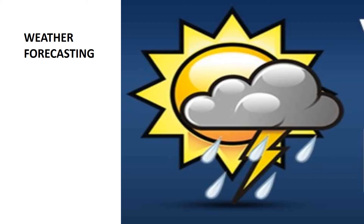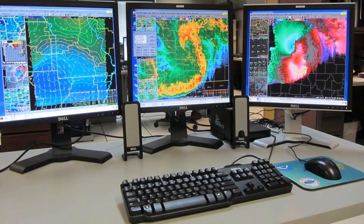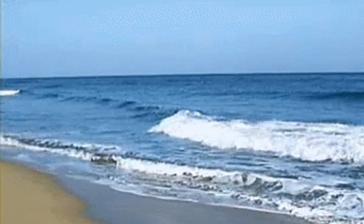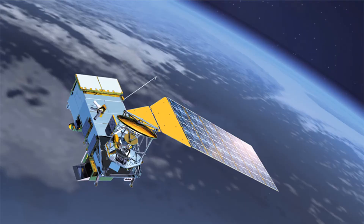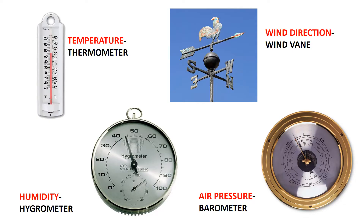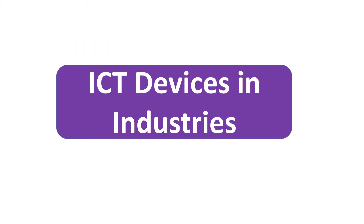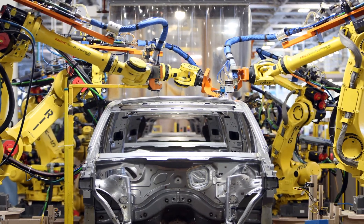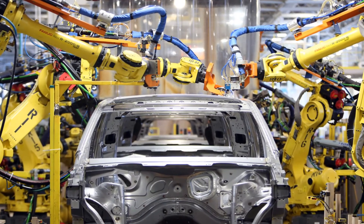Modern ICT devices perform weather forecasting by collecting data from land, sea, air, and satellites with more accuracy. The weather data includes temperature, wind direction, humidity, and air pressure.